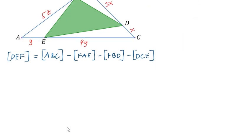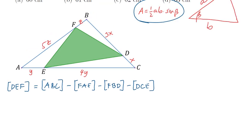Let's have first the area of triangle FAE. The area of triangle FAE, using this formula, is equal to 1 half times y times 5z times the sine of angle A. This is 5 over 2 YZ sine A.